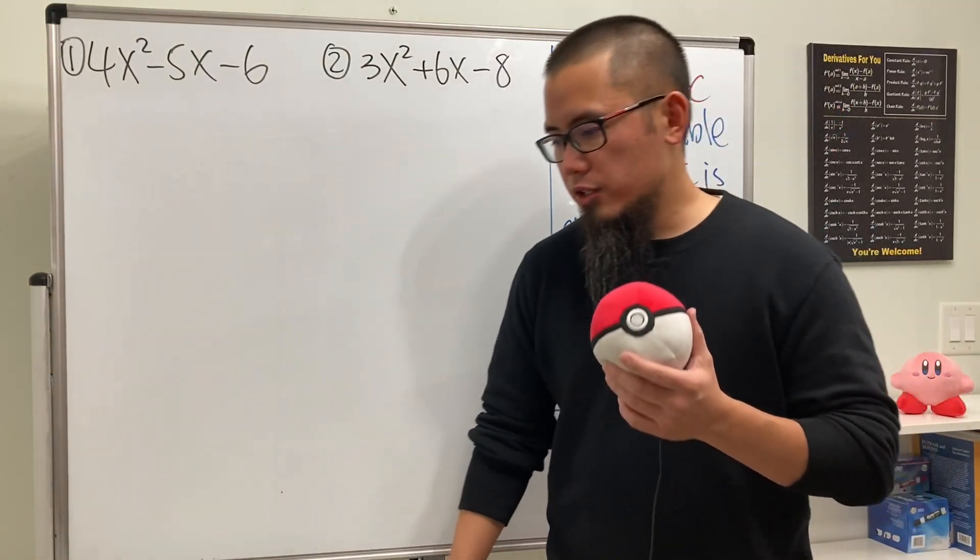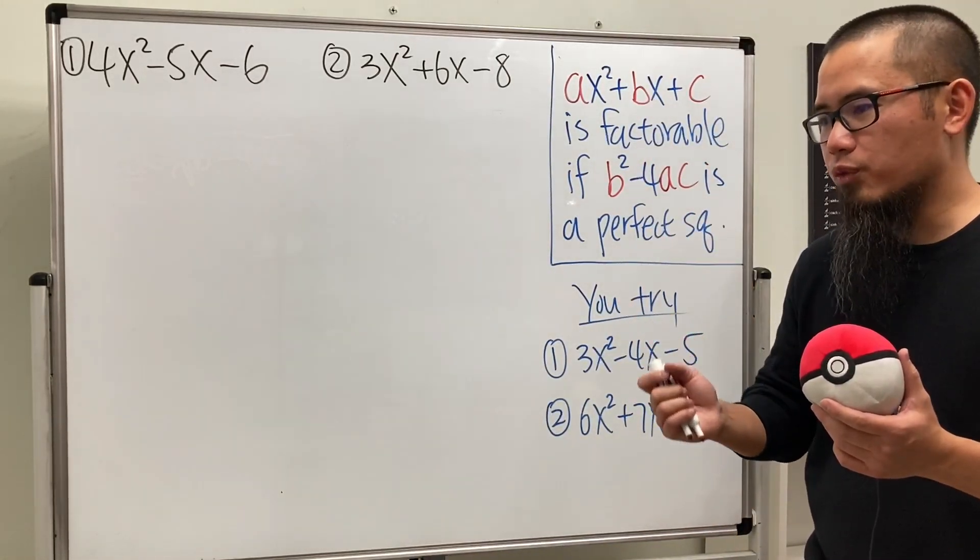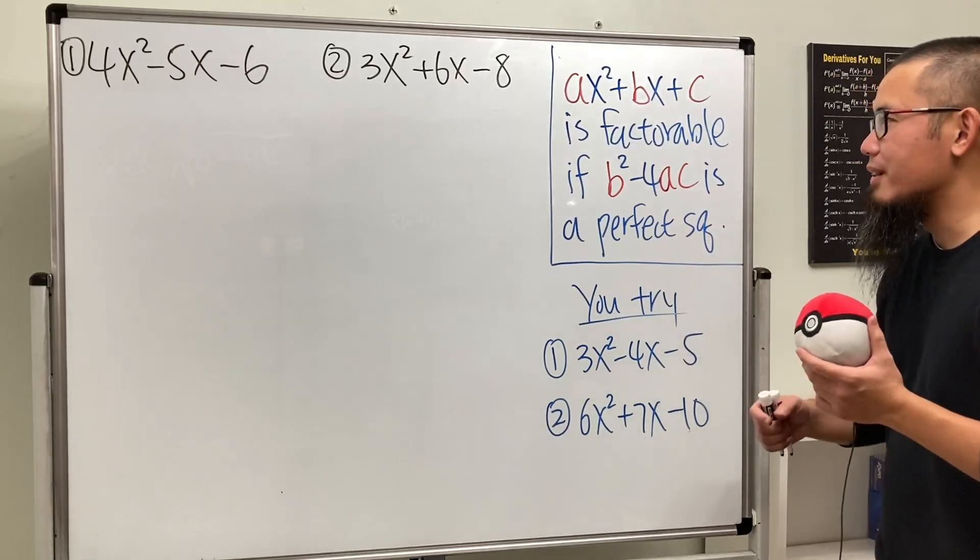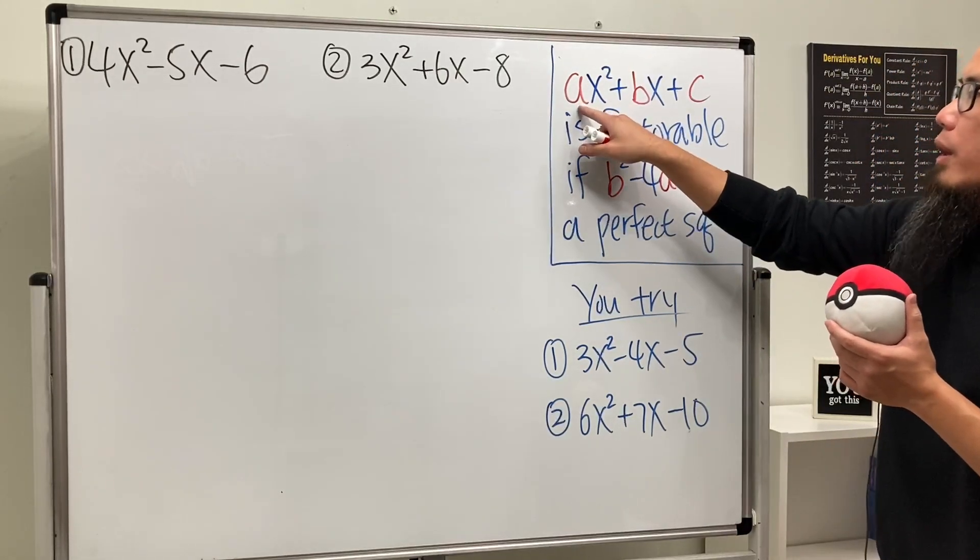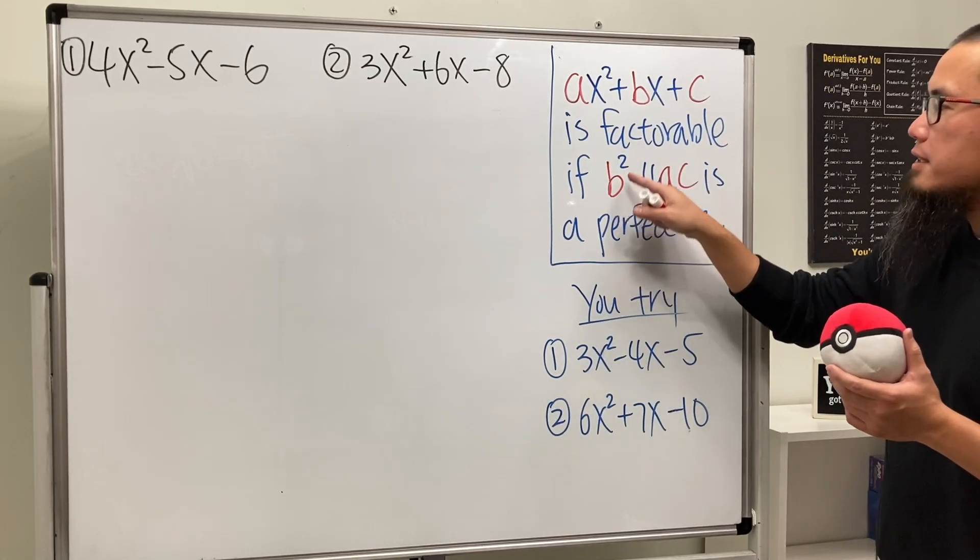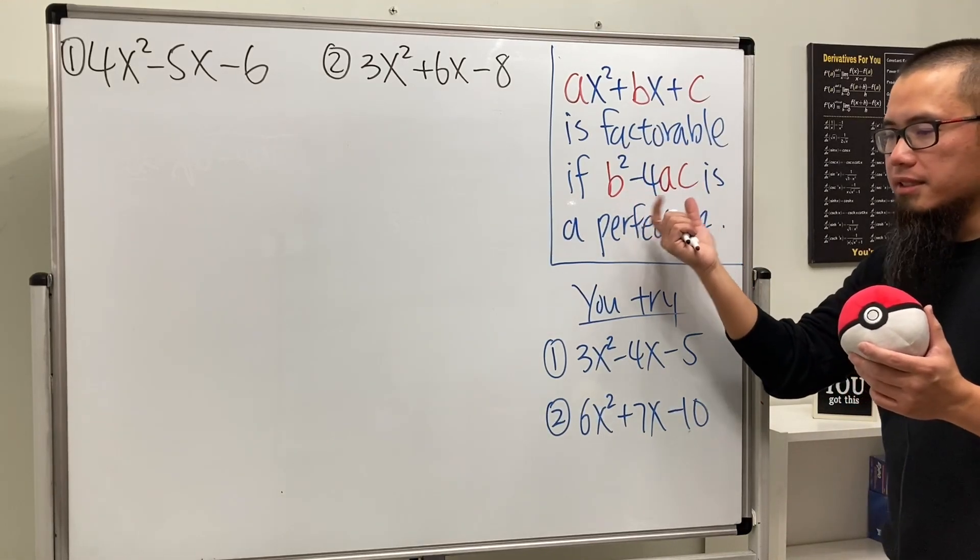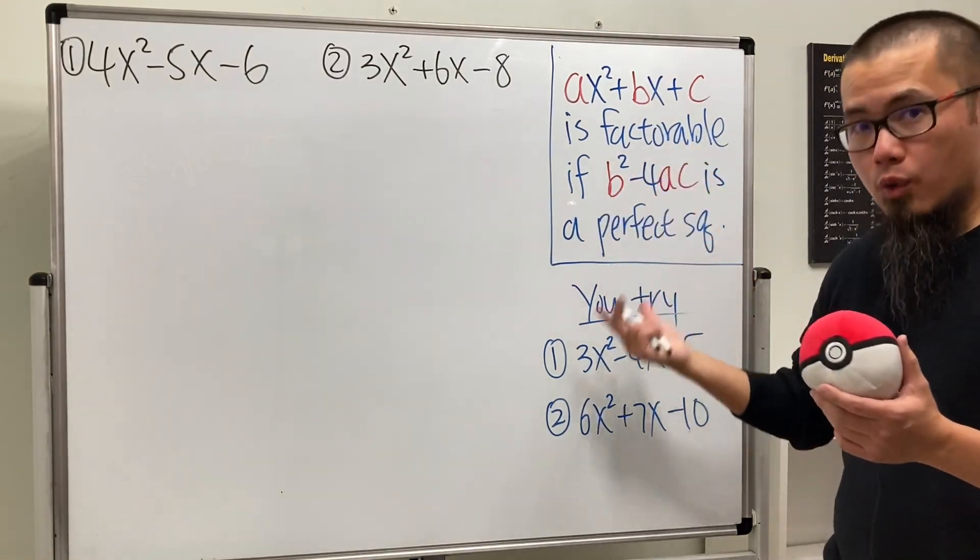In fact, we can actually just borrow a small part of the quadratic formula. Check this out right here. The quadratic trinomial ax² + bx + c is factorable if b² - 4ac is a perfect square. This right here is inside of the square root of the quadratic formula, right? And it has a special name.